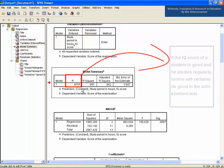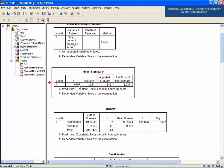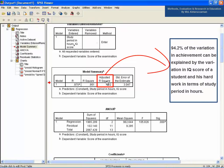It implies that if the IQ score of a student is good and he studies regularly, he or she will certainly do good in the achievement test. The adjusted R square value 0.942 indicates that 94.2% of the variation in achievement can be explained by the variation in IQ score of a student and his hard work in terms of study period in hours.